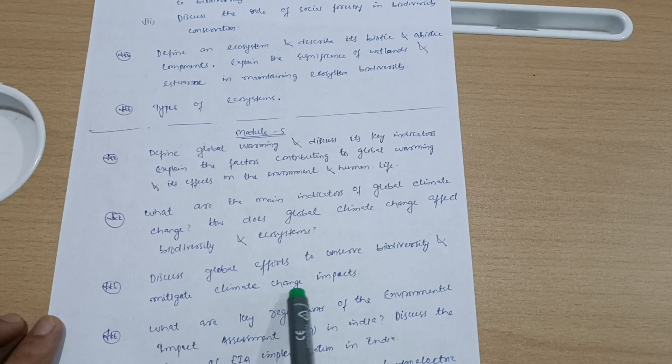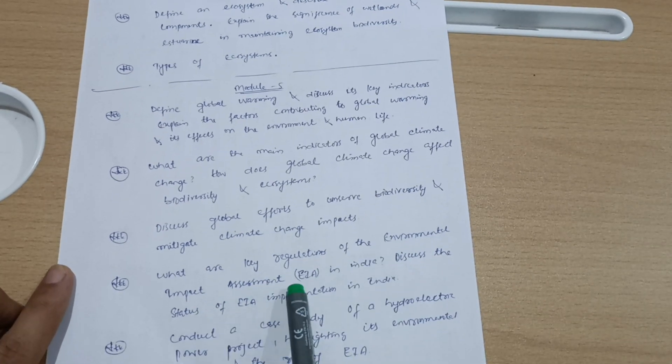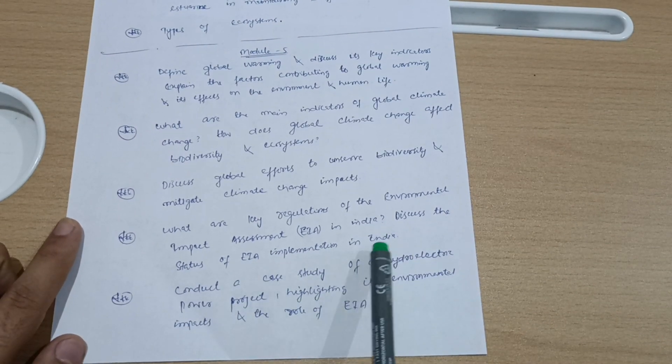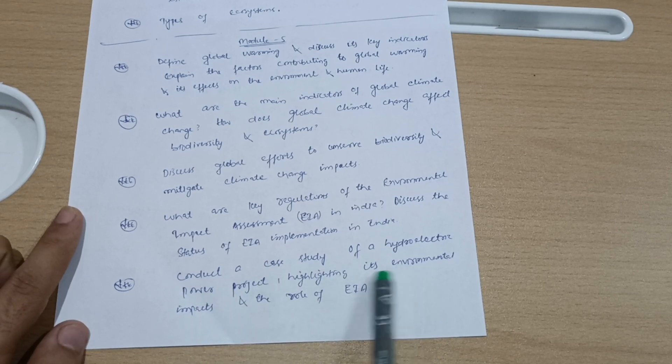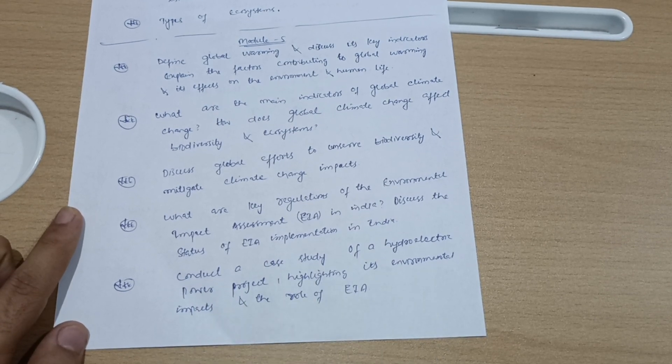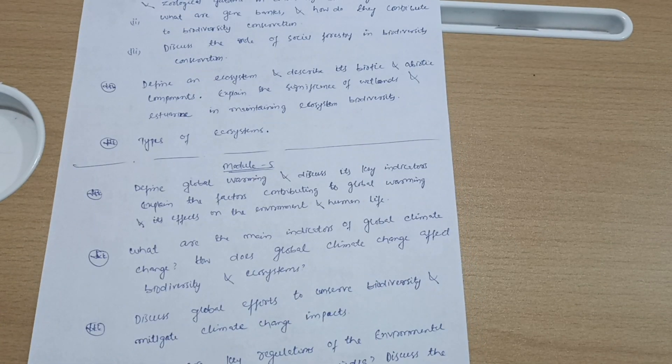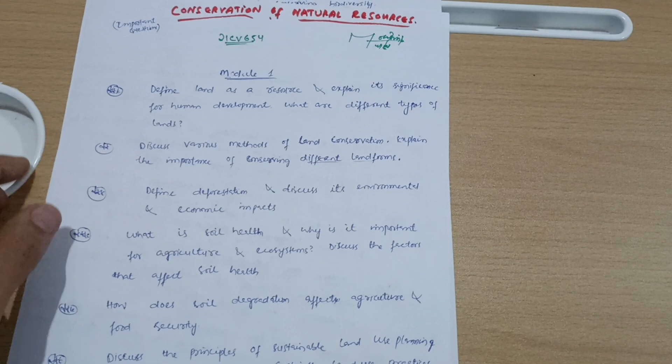Discuss global efforts to conserve biodiversity and mitigate climate change impacts. What are the key regulations of the Environmental Impact Assessment (EIA) in India? Discuss the status of EIA implementation in India. Conduct a case study of a hydroelectric power project highlighting its environmental impacts and the role of EIA.